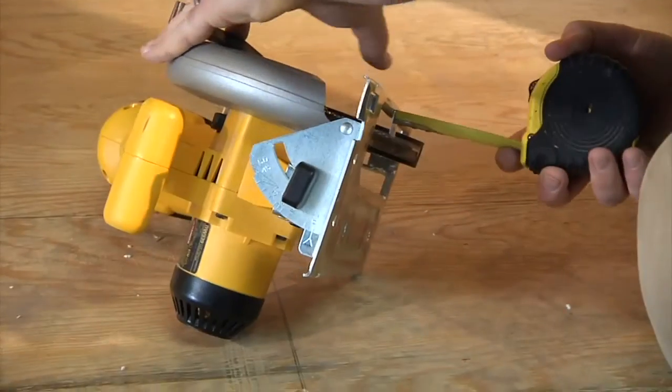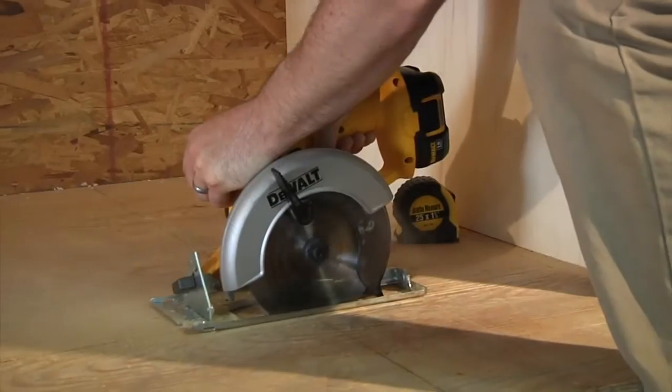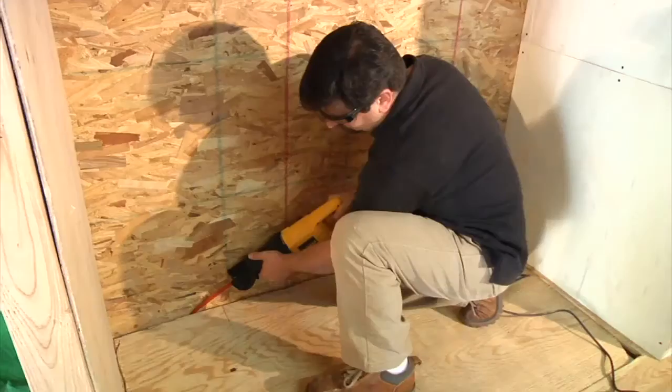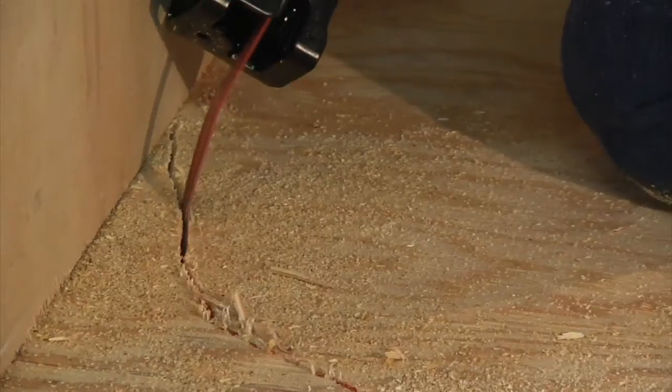Using a circular saw, set the depth to the same thickness as the subfloor so that you don't cut into any of the joists or support below. Now switch to a reciprocating saw to make cuts along the back wall and the two side walls.